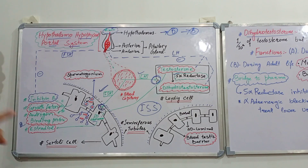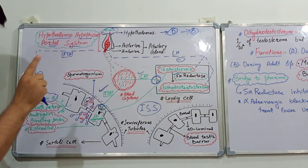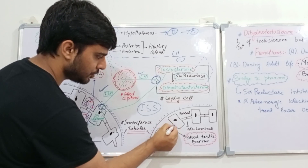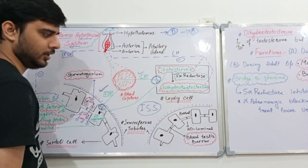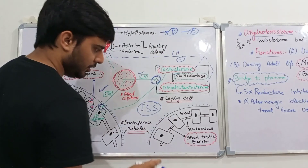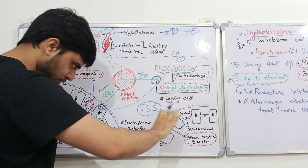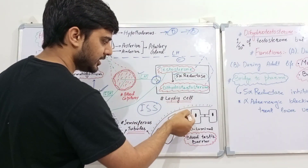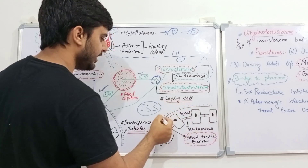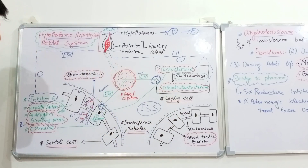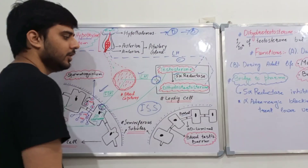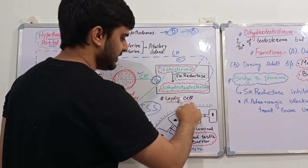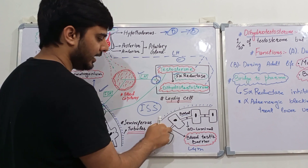Another important function of the Sertoli cell is the formation of the blood-testis barrier. Cytoplasmic processes of adjacent Sertoli cells are bound by tight junctions, dividing the seminiferous tubule into two compartments: the basal compartment facing the basal lamina, and the luminal compartment facing the lumen. This structure constitutes the blood-testis barrier.